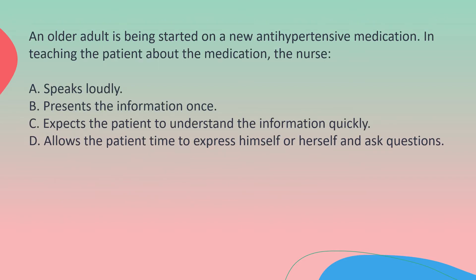An older adult is being started on a new antihypertensive medication. In teaching the patient about the medication, the nurse: A. Speaks loudly. B. Presents the information once. C. Expects the patient to understand the information quickly. D. Allows the patient time to express himself or herself and ask questions.